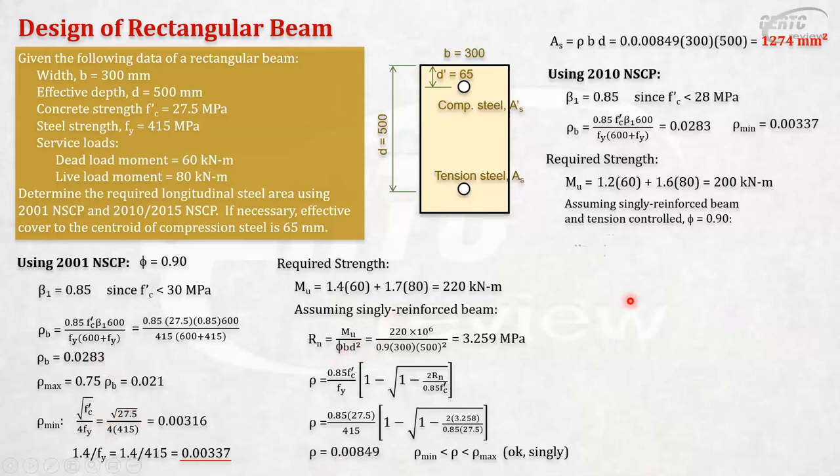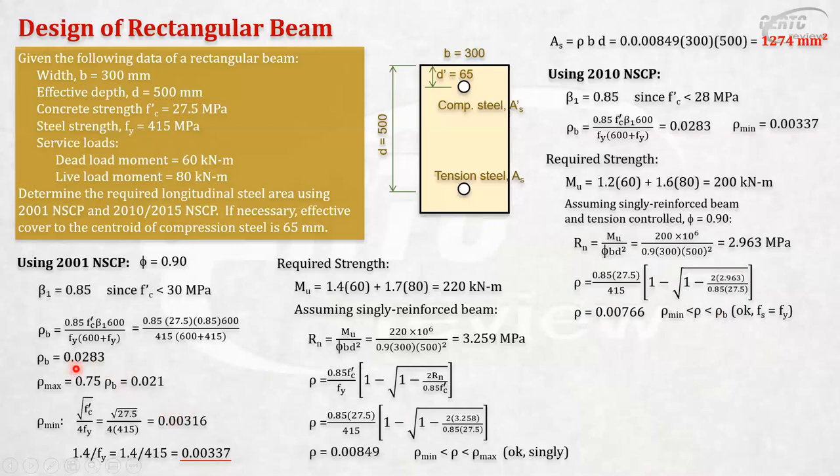So, okay. Let's assume 0.9 first. You can watch this in our, we will be discussing this in the other parts of tension control, compression control. We will discuss it further. Alright. So, the same formula. This is it. Rn. Mu over phi bd squared. We can get the Rn. Then, that's 2.963. And then, we can get the rho. The same formula here. This is still your formula. Okay. So, let's substitute. And that is 0.00766. Of course, that is greater than rho min. So, it's okay. And it is less than rho max. That means, and the tension steel will yield.